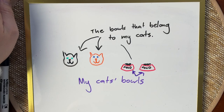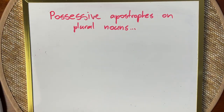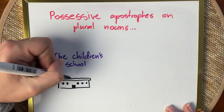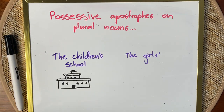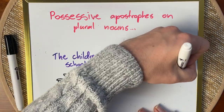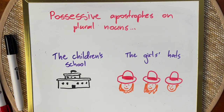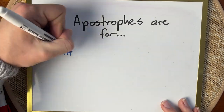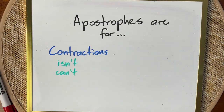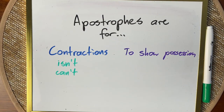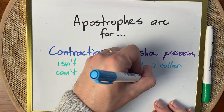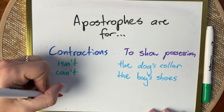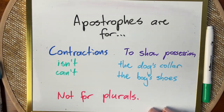My cats' bowls. If the noun is already a plural, like 'children,' it gets an apostrophe S: 'the children's school.' If you add an S to make it plural, the apostrophe goes after the S: 'the girls' hats.' But in short, there are two reasons we use apostrophes: when we have a contraction, like 'isn't' or 'can't,' or to show possession, like 'the dog's collar' or 'the boy's shoe.' We don't use them for plurals — we don't need one every time we put an S at the end of a word, only if the word is part of a contraction or if the word is in possession of something.